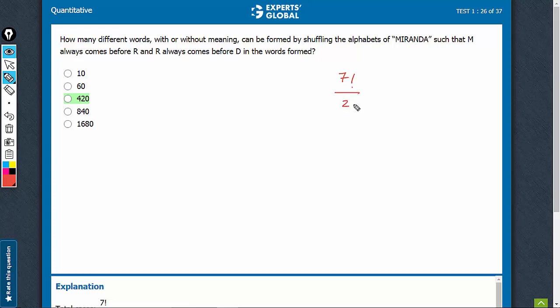So this is the total number of arrangements. And now, out of these, M comes before R and R comes before D.